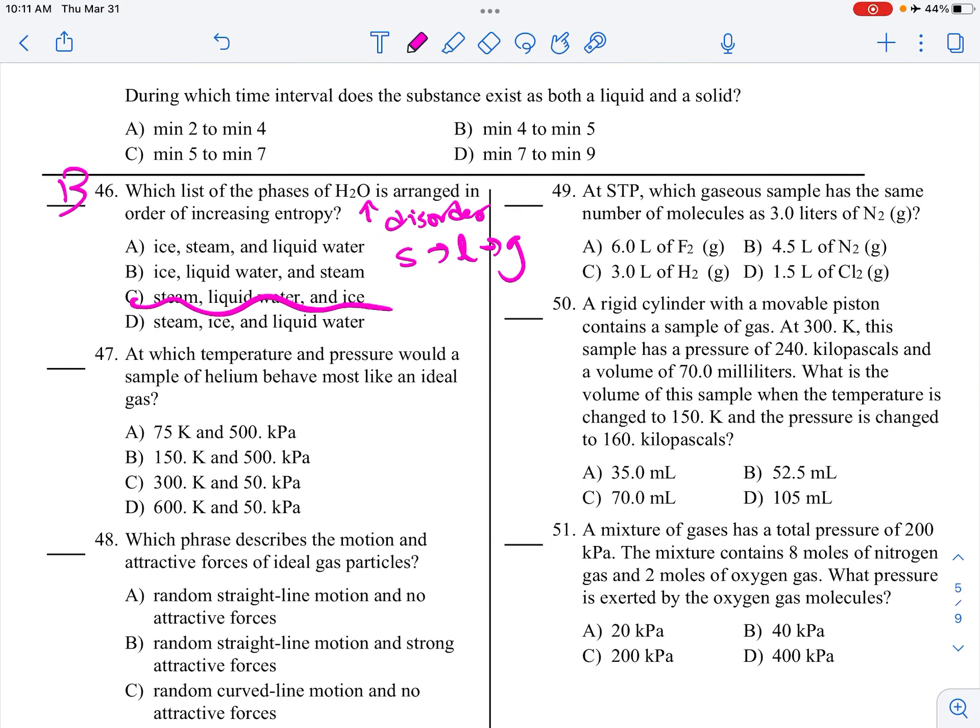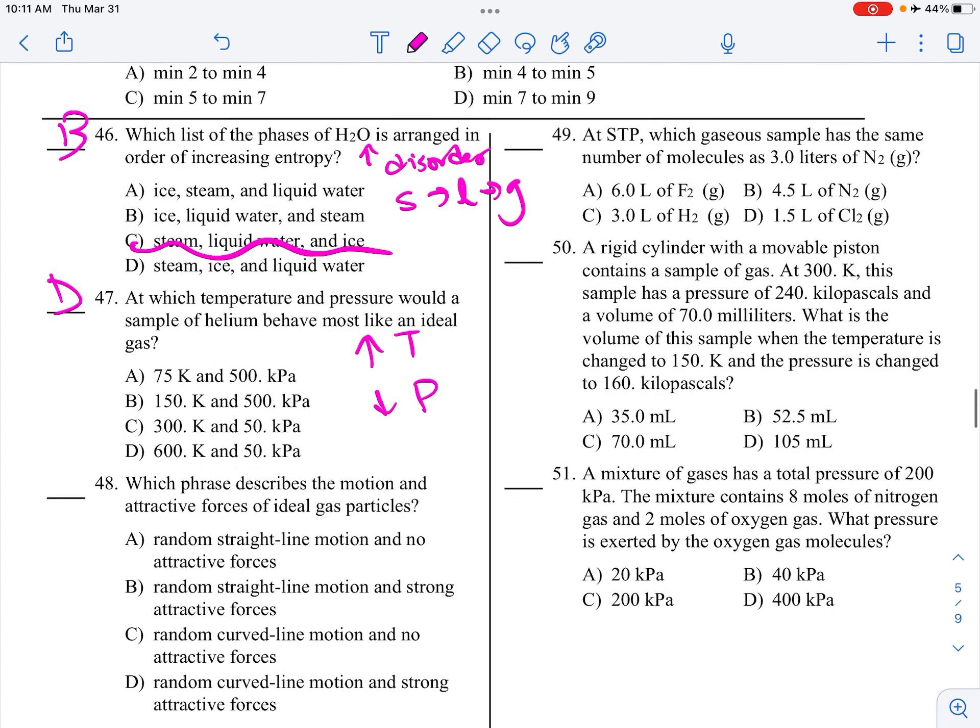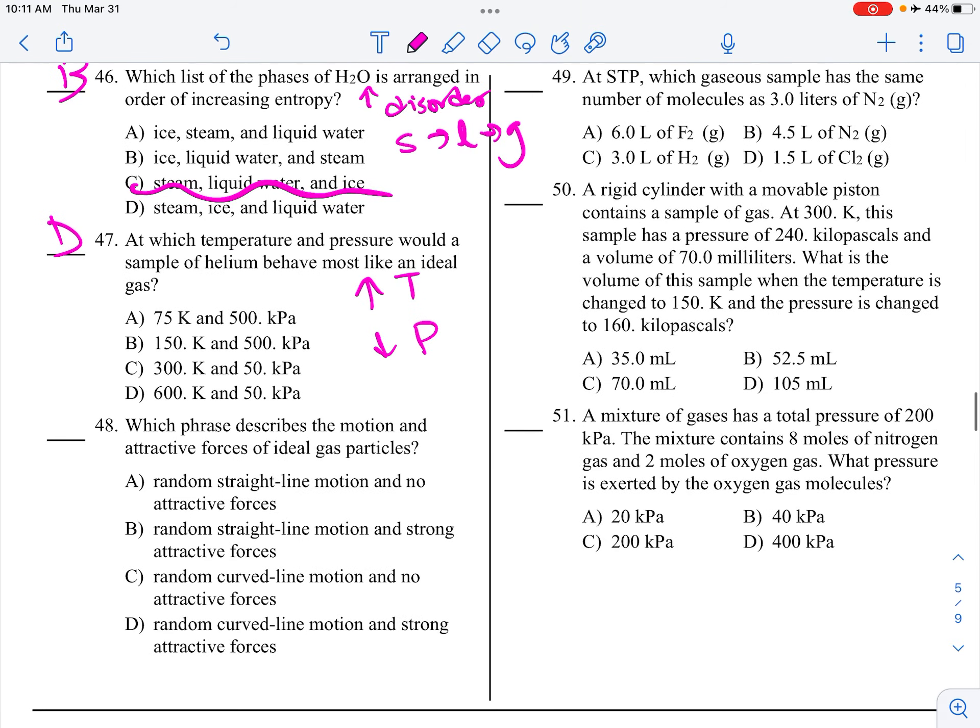Ideal gas is the beach. So, high temperature, low pressure. So, the highest temperatures and the lowest pressures. The attractive forces, motion and attractive forces of ideal gases. So, random straight line motion and no attractive forces.